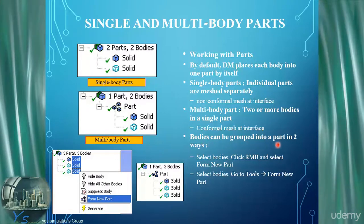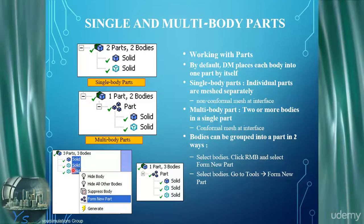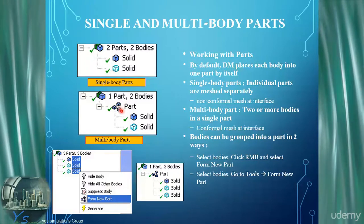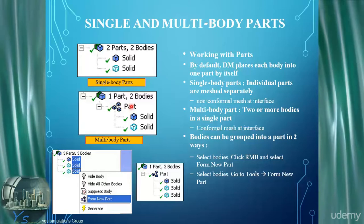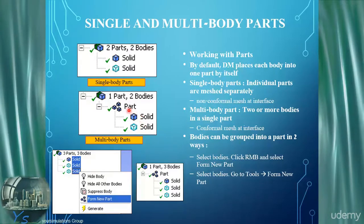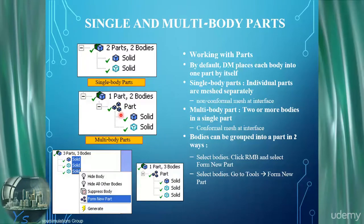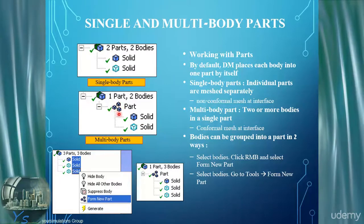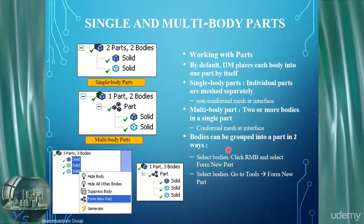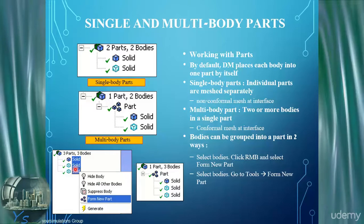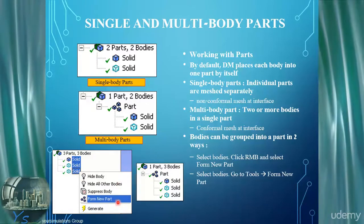Multi-body parts can be generated in different ways. We can simply use control-select or shift-select to select all bodies, then right-click and select 'Form New Part.' That creates a small icon of three cubes and lists it as a part, with all constituent bodies listed underneath. Regardless of the number of bodies, this three-cube icon is the default generic icon for a multi-body part. Alternatively, you can go to Tools and Form New Parts, but it's easier to select bodies in the tree and right-click.